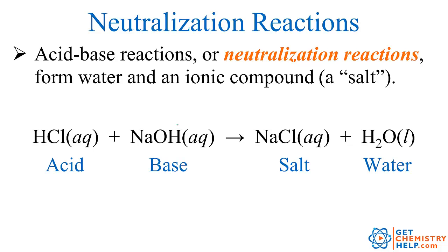An acid-base reaction is just a specialized type of double-displacement. There are two reactants — one is always an acid, and the other one is always a base. There are actually several different types of bases, but the most common type we're going to refer to are metal hydroxides. So if you see OH combined with some kind of metal cation, that's going to be a base. Since we have hydrogen from the acid and hydroxide from the base, those always combine to give us water.